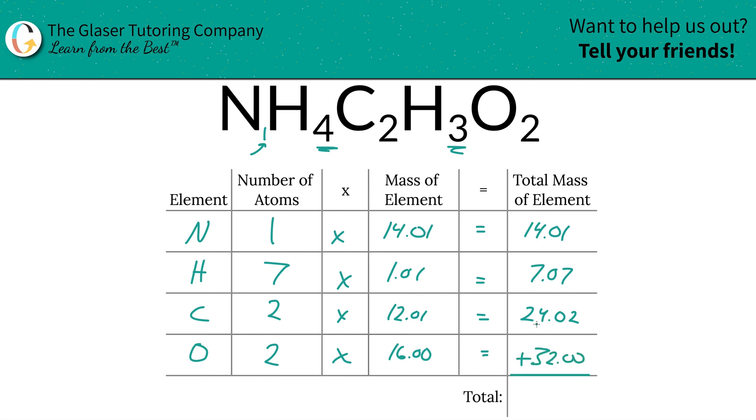Now, to find the total mass of the entire compound, all you simply have to do is just add up all the total mass of each element. Look at how nice and simple that is. So 77.10. And the units there are AMU, atomic mass units, and that's all there is to it.